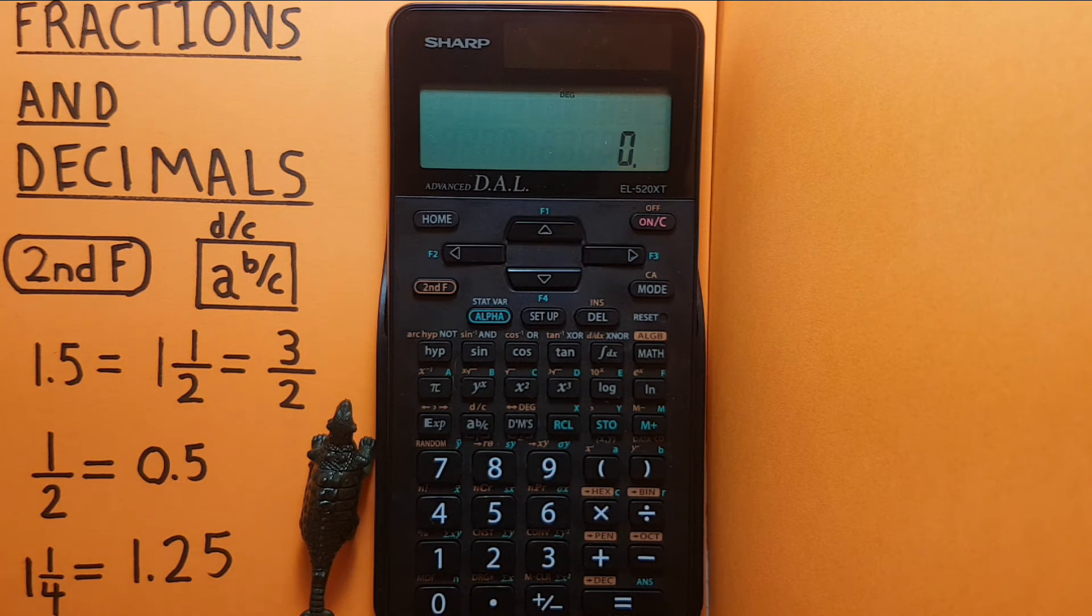Another example is let's say we have 1 and 1 quarter and we wish to convert this to a decimal.